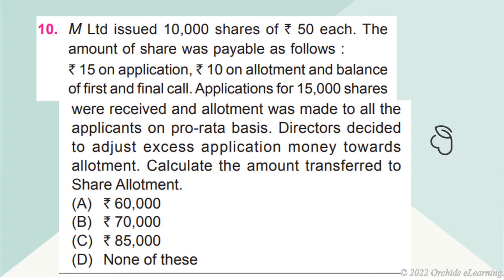M Limited issued 10,000 shares of Rs. 50 each. The amount of share was payable as follows: Rs. 15 on application, Rs. 10 on allotment, and balance on first and final call. Applications for 15,000 shares were received and allotment was made to all applicants on a pro-rata basis. Directors decided to adjust excess application money towards allotment. Calculate the amount transferred to share allotment. Answer d: None of these.